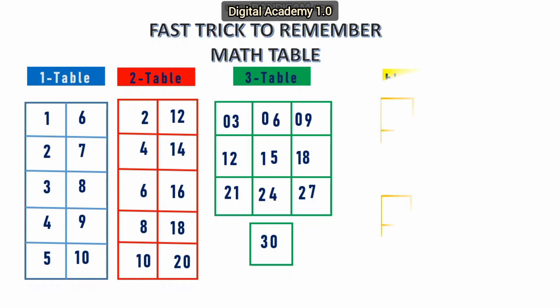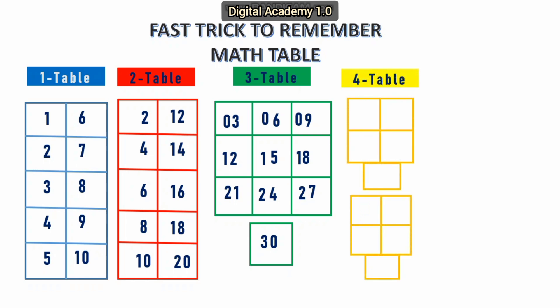Next, let us see the 4 table. Here also there are 2 steps. In the first step, enter the even numbers from bottom: 0, 2, 4, 6, 8. In the second step, repeat the same digits from 0 to 8. Enter 0 in the first 2 boxes, then enter 1, and write 2 in the last box. Then enter repeated digit 2, then 3 to 3, and finally finish with 4. So this becomes the table of 4.